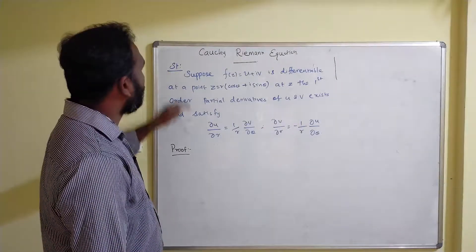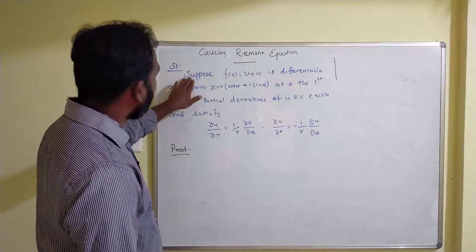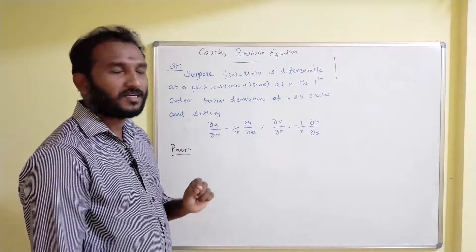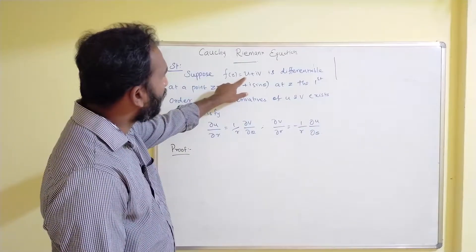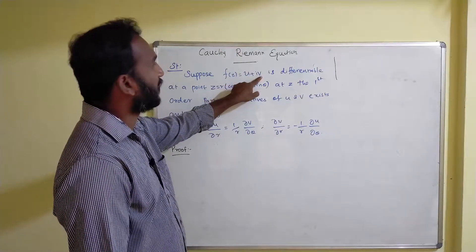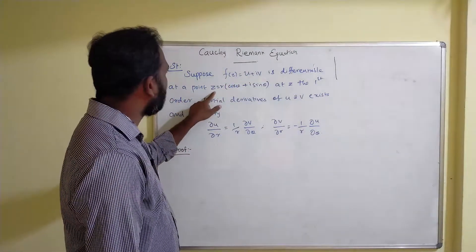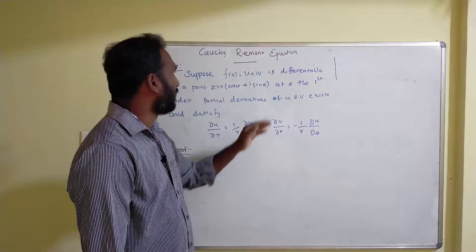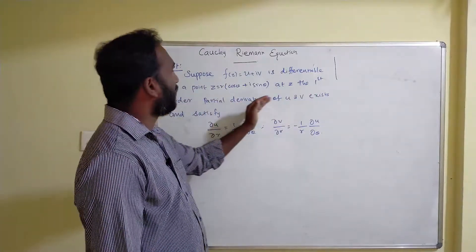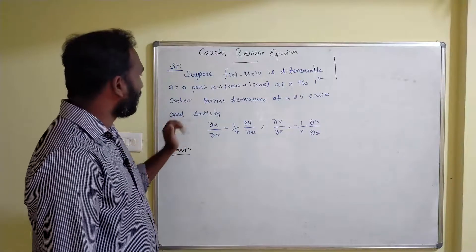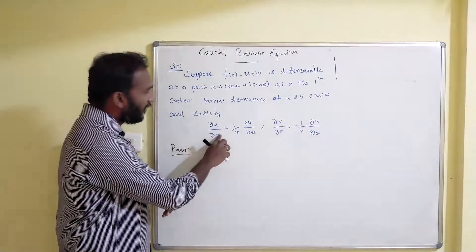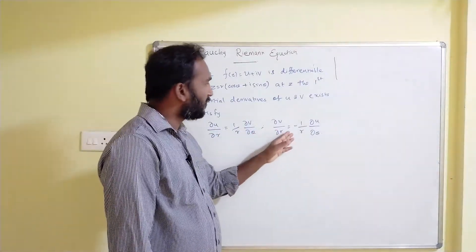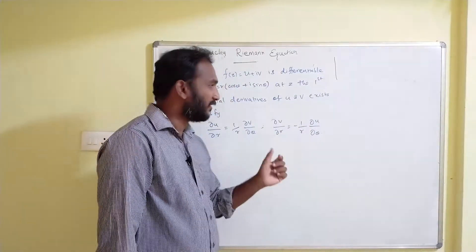Here is the statement of the Cauchy-Riemann equation for polar coordinates. Suppose f(z) = u + iv, where u and v are functions of r and θ, or f(z) = u(r,θ) + i·v(r,θ), is differentiable at a point z = r(cosθ + i sinθ) = r·e^(iθ). At z, the first order partial derivatives of u and v exist and satisfy: ∂u/∂r = (1/r)·∂v/∂θ and ∂v/∂r = -(1/r)·∂u/∂θ.